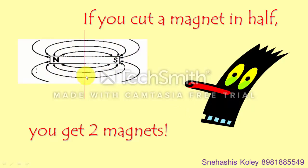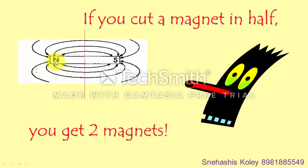You cannot have magnetic monopoles. Mono means single, meaning only a north or only a south pole cannot exist. If we break a magnet into two pieces, it will produce two separate magnets, each consisting of both a north pole and south pole. So a magnetic monopole does not exist.